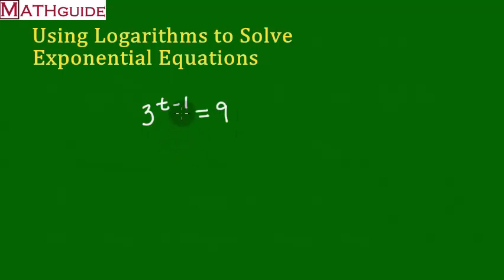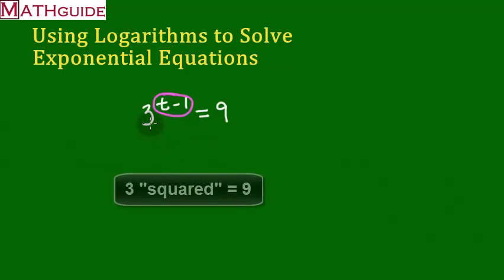We already know what this power has to be to make this equation work. We all know that 3 squared, or 3 times 3, has got to be equal to 9. So that would mean that t minus 1 has got to be equal to 2. That's all got to be a square.